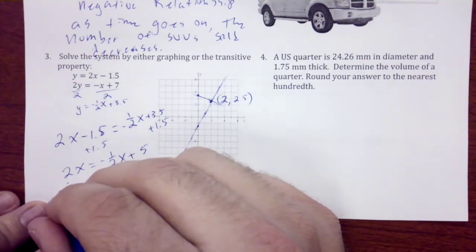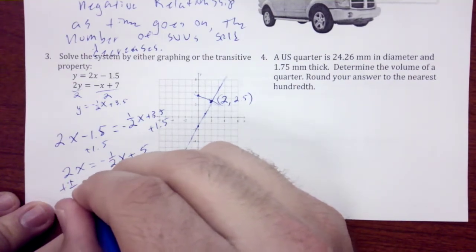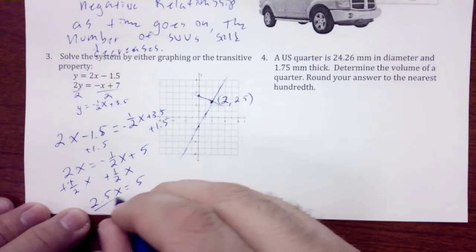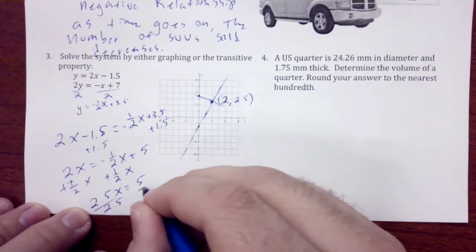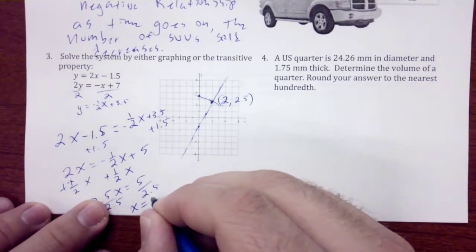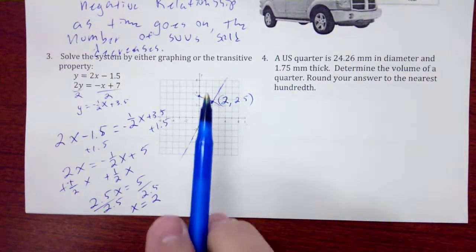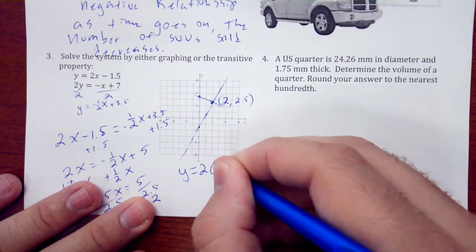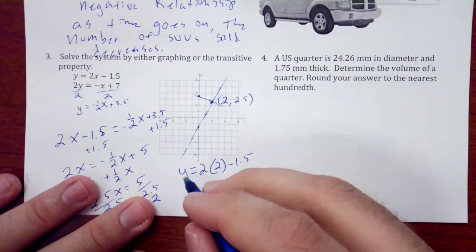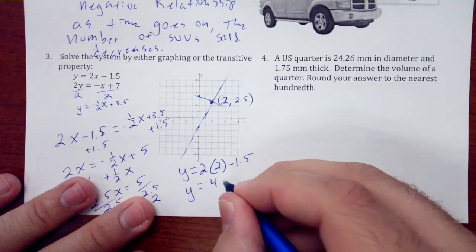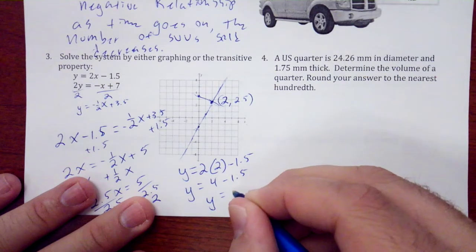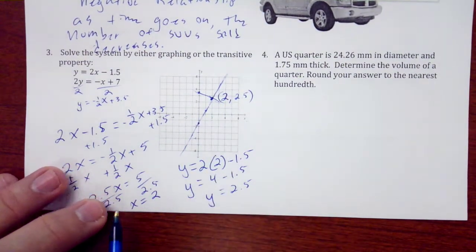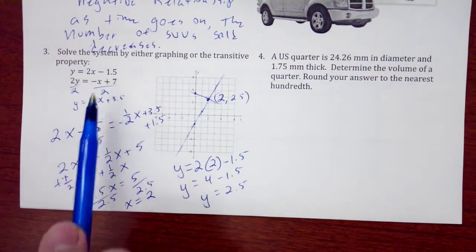I get 2.5x = 5, and then divide by 2.5 and I get x = 2. Well, x = 2, I plug this back in: y = 2(2) - 1.5, so y = 4 - 1.5. There we have our (2, 2.5). You could plug this x back into the other equation, you end up with 2.5 as well.